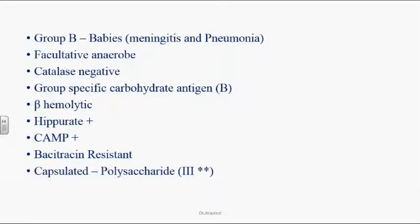These organisms are capsulated with a polysaccharide capsule. Especially the third serotype — serotype 3 — is more virulent in causing meningitis and pneumonia in babies, with a higher incidence rate of meningitis. That is why it is called the most common cause of bacterial meningitis in neonates.